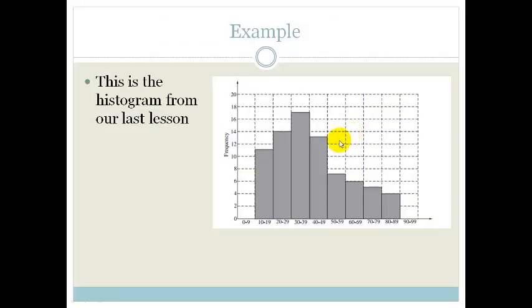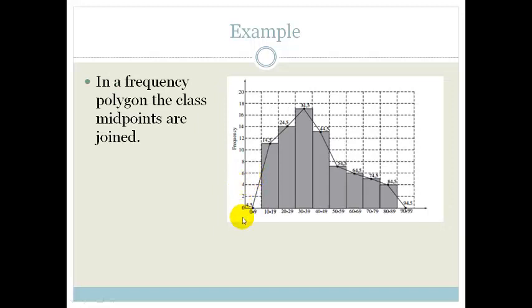This here is the histogram from our last lesson which was the age groups of people going to the gym, and this would be the frequency polygon.